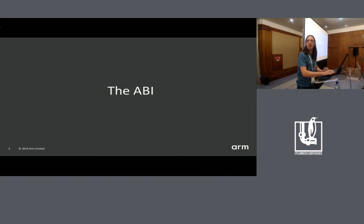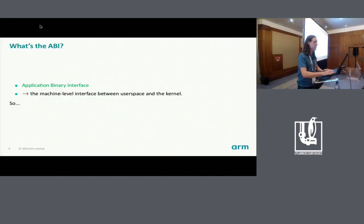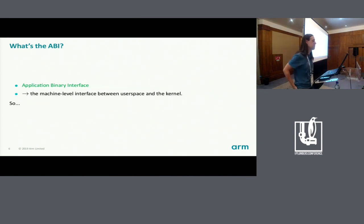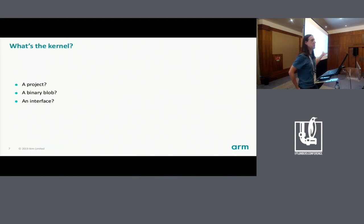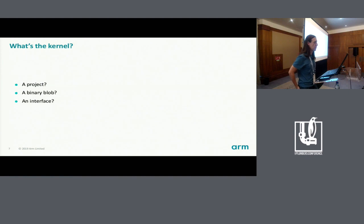I'll take a moment to explain what I mean by ABI. The application binary interface is the machine-level or assembler-level interface between user space and the kernel. But there are some different ways we could interpret the notion of what the kernel is. Linux is a project with a Git tree maintained by a community. It might also be viewed as the binary blob that the bootloader loads and runs in privileged mode, or as an API or interface where you don't necessarily care about how it's implemented.